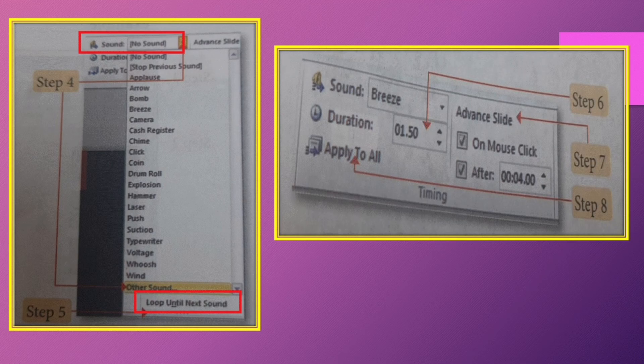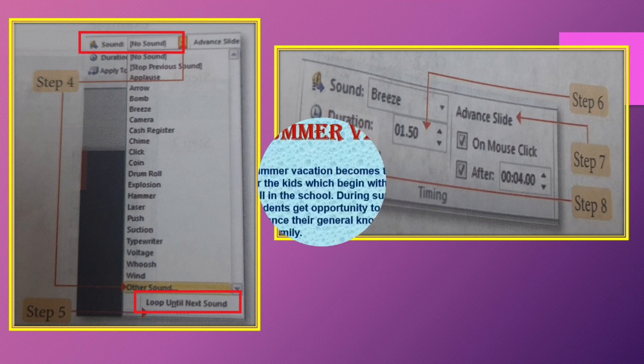You can select whether the transition will play on mouse click or after a set time period. Finally, click on Apply to All so that all settings are applied to all slides. This whole process is also shown with a video — please watch and understand.